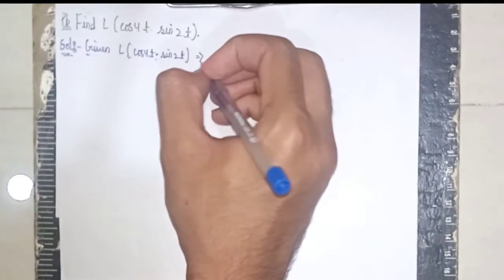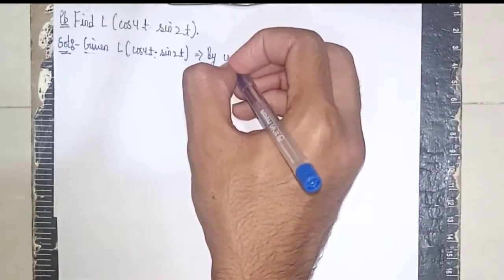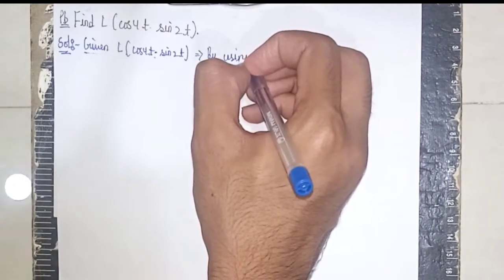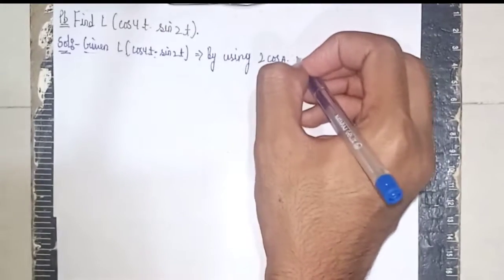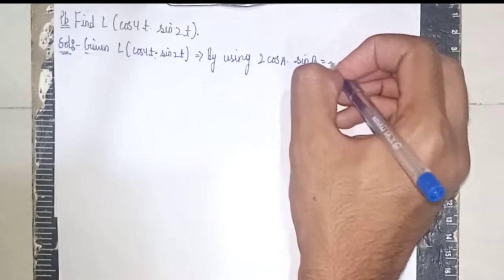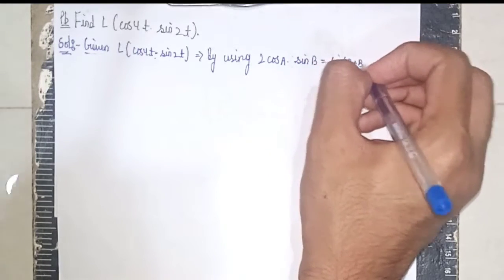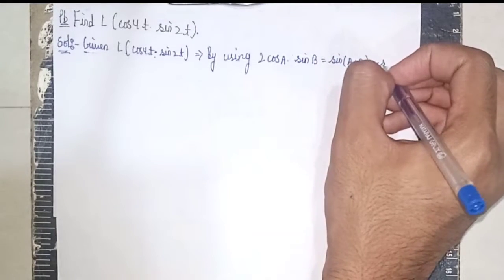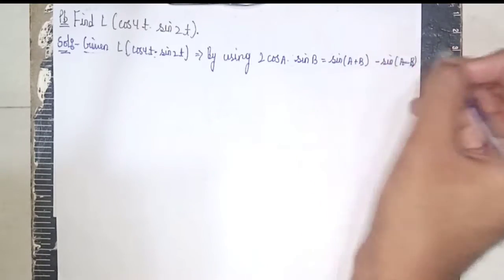By using 2 cos a times sin b equals sin (a plus b) minus sin (a minus b), okay this is the algebra formula.